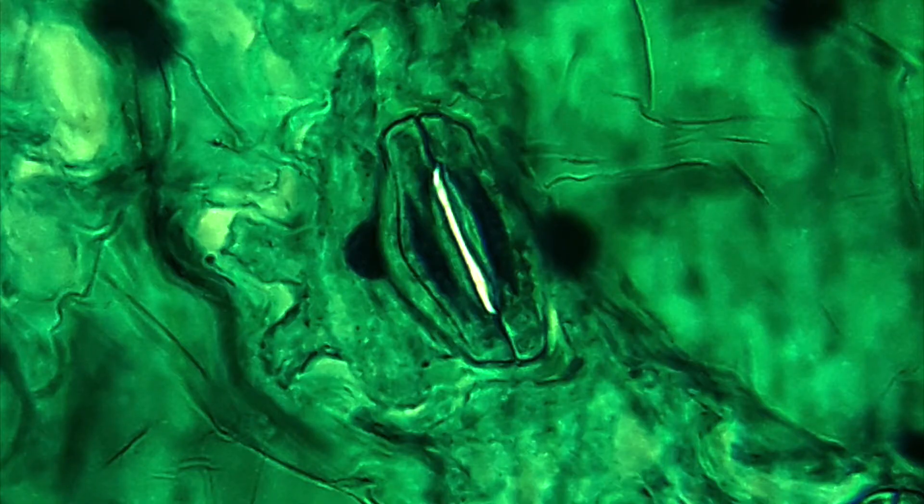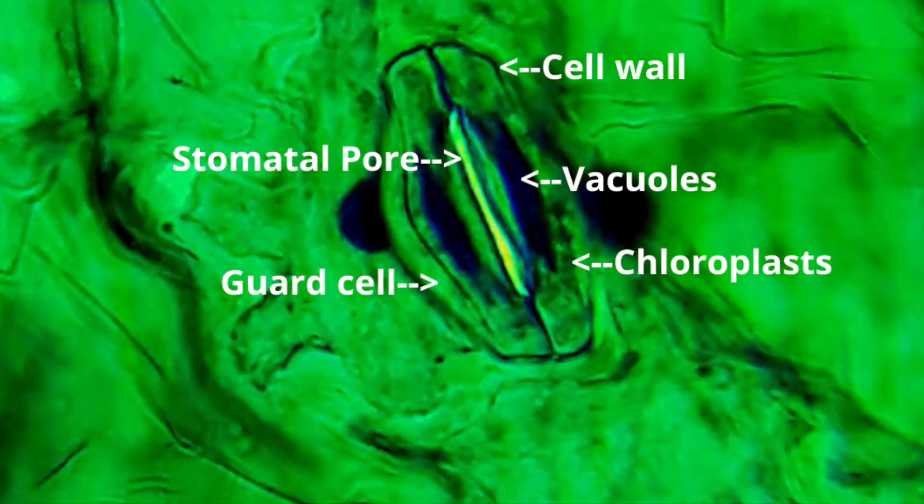Let's now look at this structure. Here's a diagram of a stoma. We can clearly see two guard cells, each of them contains a vacuole. These are the dark parts between the guard cells.